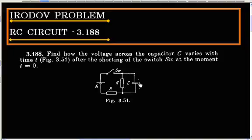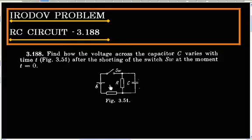This circuit contains a capacitor, two resistors, and a battery. Initially the circuit is open, i.e., there is no current inside the circuit. At T equals zero, this circuit is closed.